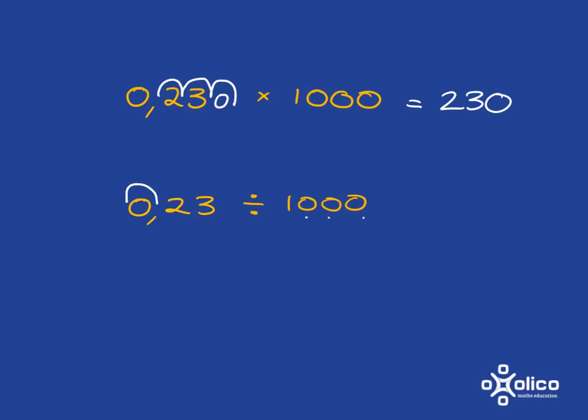So we're going to move 1, 2, 3 lots over, put the comma there, and we'll fill in the 0s. And so we get our answer is 0,00023.